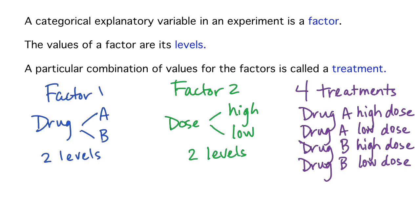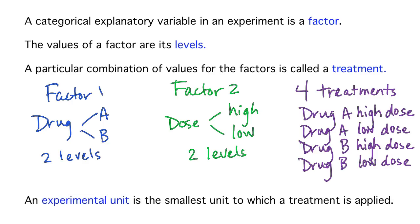In experiments, the participating subjects or individuals are called experimental units. Sometimes treatments are given to groups of people or things, like all of the students in a class receiving a new teaching method, or all of the plants in one pot receiving a new type of fertilizer. The experimental unit is then not the individual student or plant, but the whole class or pot.